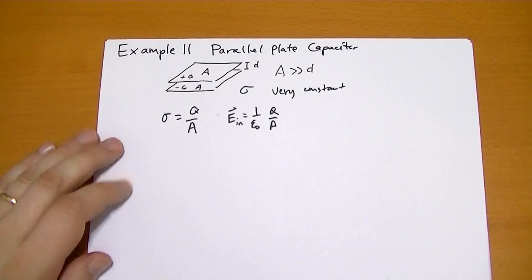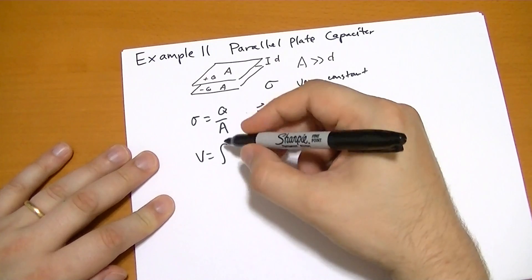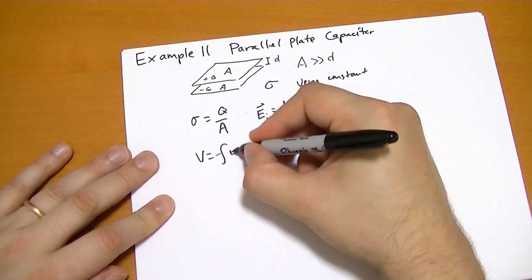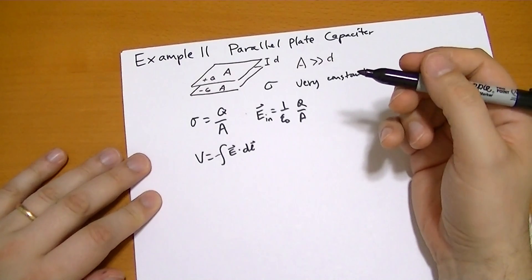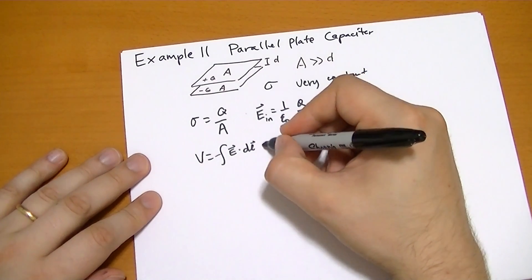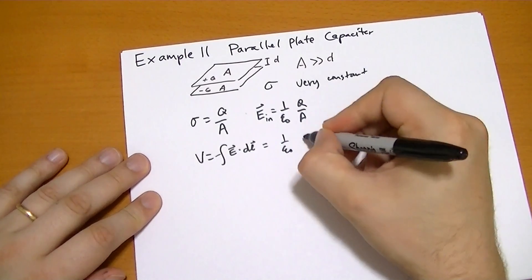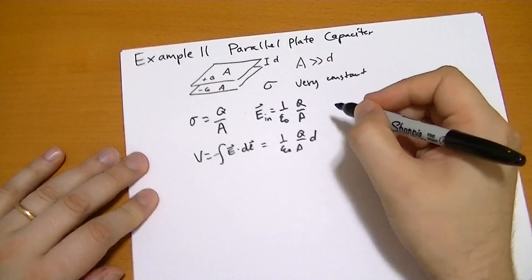So what's the potential between the two? Well, the potential is just the integral −E⃗·dL⃗. So the E vector is constant, the distance is D. So it's basically 1 over ε₀ Q over A times the distance D.